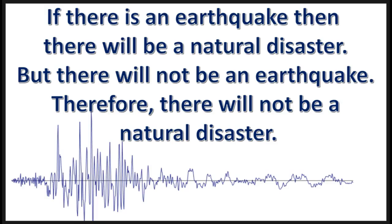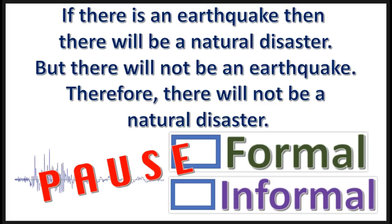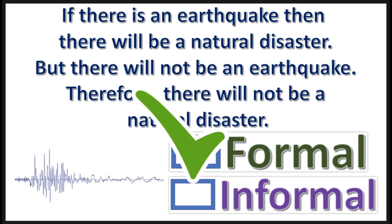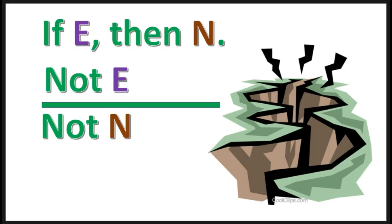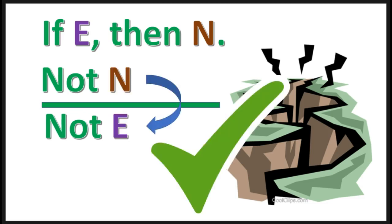Practice problem number one: What type of fallacy is contained in this argument? Press pause — the answer will appear in 3, 2, 1. This is a formal fallacy. It's a kind of hypothetical syllogism — it has this form. Now if the second premise is switched with the conclusion, it would be valid.